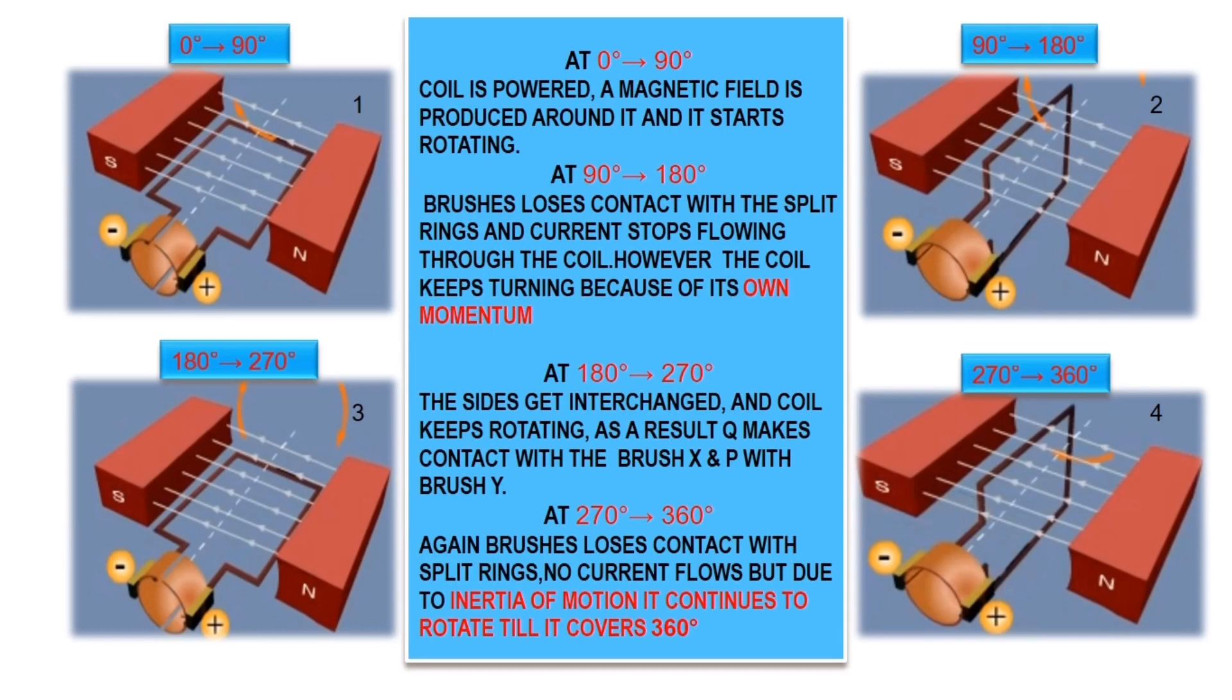At 180 to 270 degrees, the sides get interchanged and the coil keeps rotating. As a result, Q makes contact with brush X and P with brush Y. At 270 to 360 degrees, again the brush loses contact with the split rings, so no current flows, but still the coil rotates due to its inertia of motion. This is how the working of an electric motor happens. This is how a coil rotates in an electric motor.